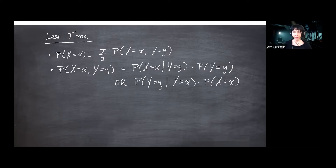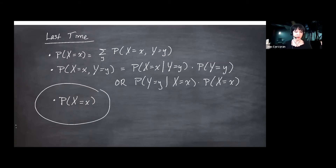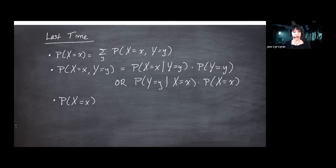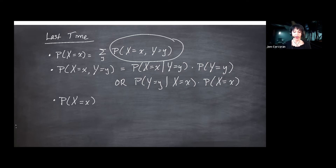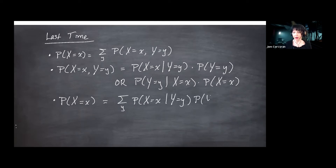Third bullet of review: if you want a probability for a discrete random variable X, you can combine the previous two bullets. You can write this as the sum over all Y of the probability that X equals x given Y equals y, times the probability that Y equals y. This computation is called conditioning on Y.